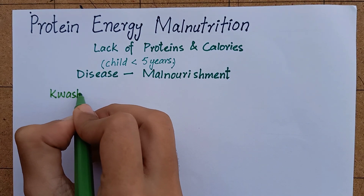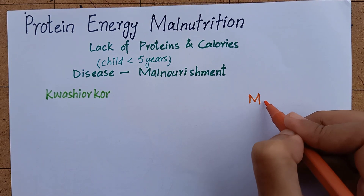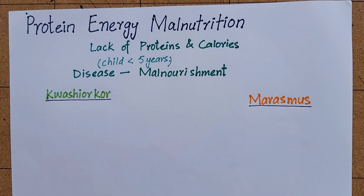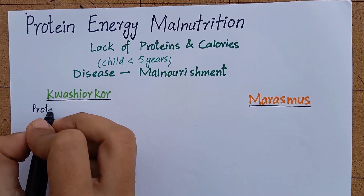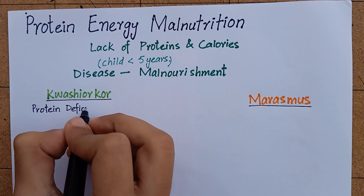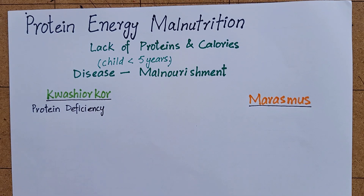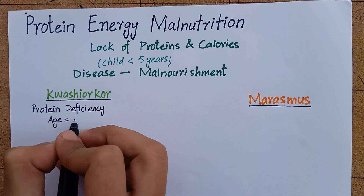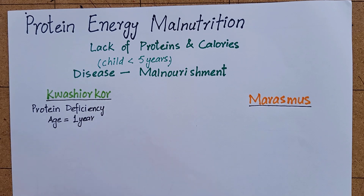The two extreme forms of protein energy malnutrition are kwashiorkor and marasmus. Kwashiorkor is a disease marked by severe protein malnutrition, although there is reduction in total calories as well. It is frequently seen in children after weaning at about one year of age when their diet mainly consists of carbohydrates.